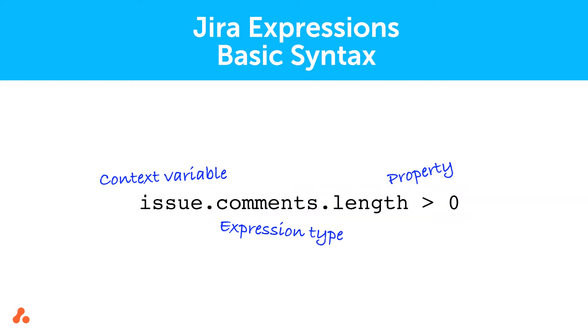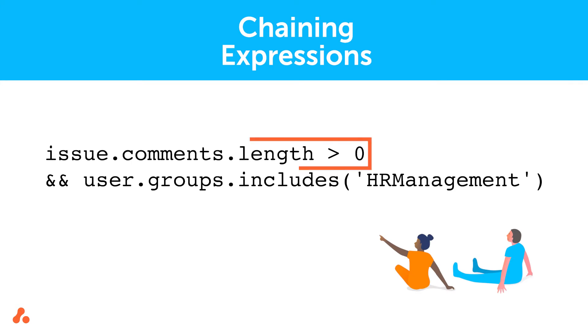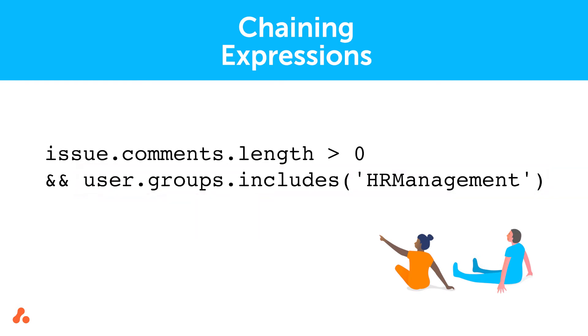When read together, the code verifies there are greater than zero comments on an issue. Expressions can also be chained together for more in-depth conditions. For example, if you need to ensure that there is at least one comment on an issue and that only users from a specific group can transition the issue, then these expressions can be chained together using standard Boolean operators.